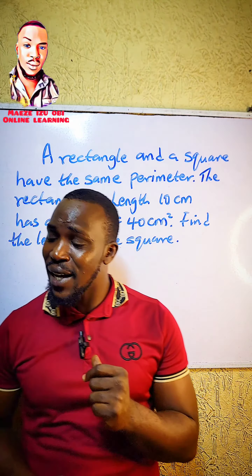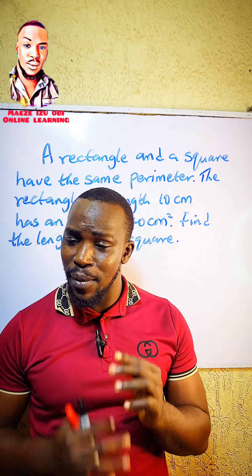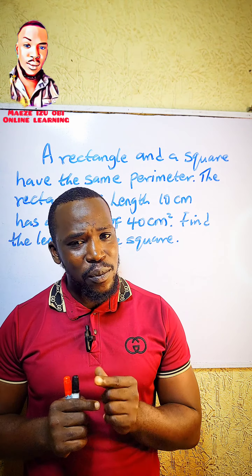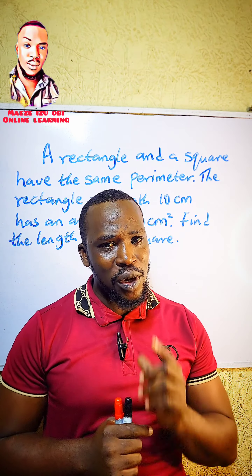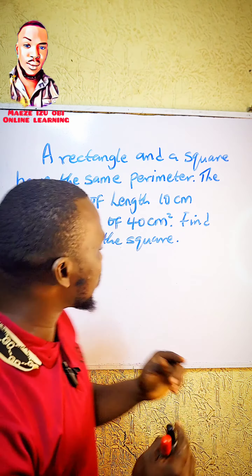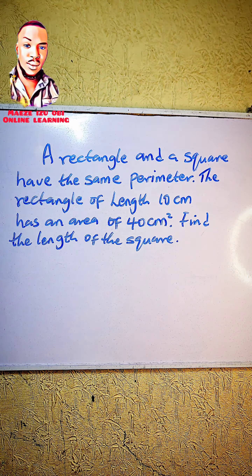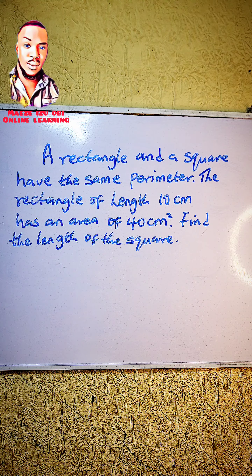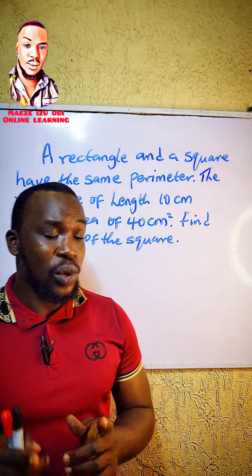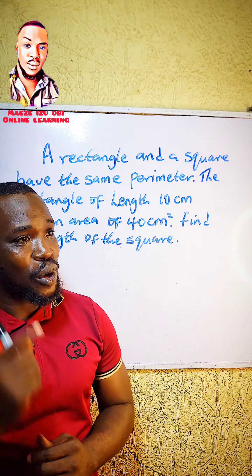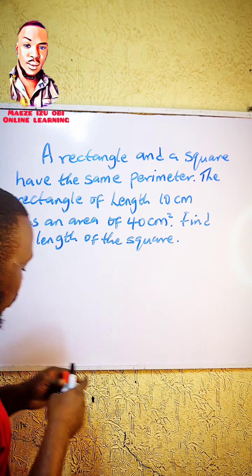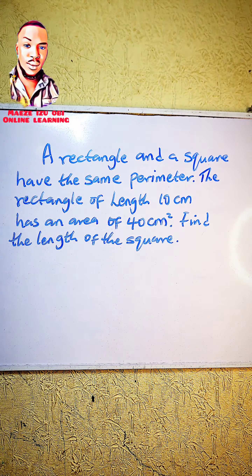Welcome back to Measure Basic Mass. In today's question, we're going to solve a beautiful question. A rectangle and a square have the same perimeter. The rectangle has a length of 10 cm and an area of 40 cm². We are going to find the length of the square. Before I solve that, please click on the follow button.